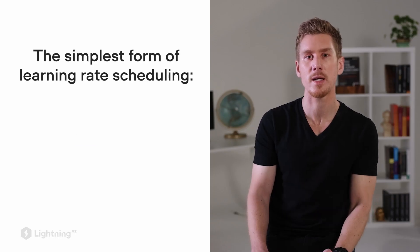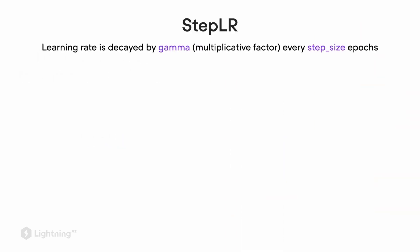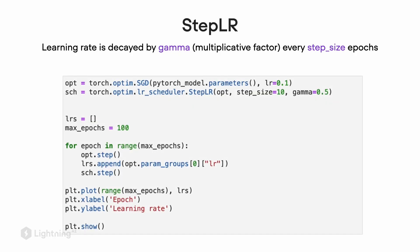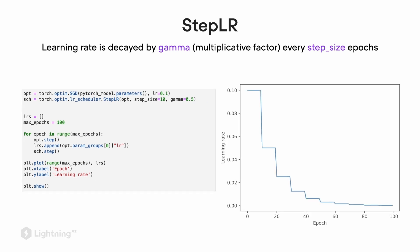Let's now talk about a concrete example: the step learning rate scheduler. The step learning rate scheduler involves two parameters — gamma and the step size. With gamma, we decay the learning rate, and with step size, we control how often we decay it. Here's a concrete example using the step scheduler in PyTorch: by setting step size to 10, we change the learning rate every 10 epochs. By setting gamma to 0.5, we multiply the learning rate by 0.5 every 10 epochs — essentially halving the learning rate every 10 epochs. Here's a plot of how that looks.